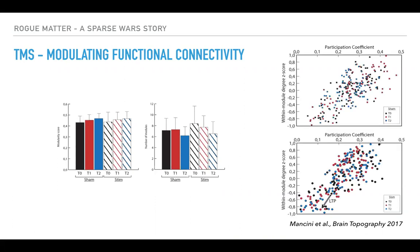However, when we looked at something completely different called the Guimerà-Amaral cartography approach, where you plot each node — each brain area — in terms of how they interact within their own community and across different communities, using the within-module degree and the participation coefficient, we saw a significant effect in the left temporal pole. This was quite far from the precuneus that we were stimulating, and this was corrected for multiple comparisons.